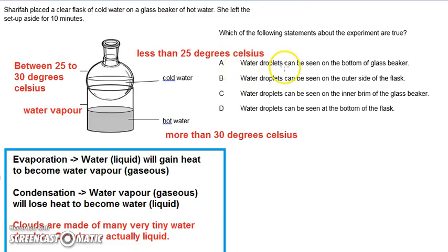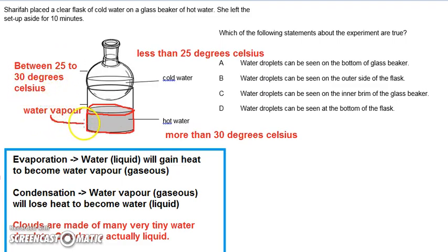Let's look at what can be seen on the bottom of the glass beaker. The area surrounding the water on the glass beaker is usually the same temperature as the hot water inside, which is more than 30 degrees. The surrounding water vapor is about 25 to 30 degrees — when it touches this surface, there would be heat gain instead of heat loss. When water vapor gains heat, it does not condense. So option A — water vapor can be seen at the bottom of the glass beaker — is not true. There's no reason for water droplets to be there because there is no condensation; the cooler water vapor in the air cannot lose heat, it gains heat instead.